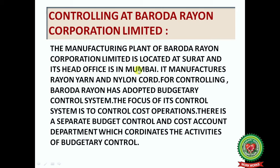The manufacturing plant of Baroda Rayon Corporation Limited is located at Surat and its head office is in Mumbai. It manufactures rayon yarn and nylon core. For controlling, Baroda Rayon has adopted a budgetary control system. The main focus of its control system is to control the cost of operations, and there is a separate budget control and cost account department which coordinates the activities of budgetary control.